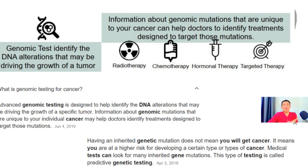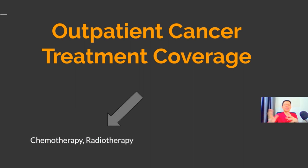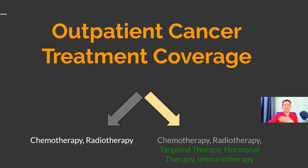Medical cards have evolved to cover genomic testing for cancer, which I think is significant. Moving on to outpatient cancer treatment coverage: conventionally, medical cards cover chemotherapy and radiotherapy within annual or lifetime limits. But due to advances in medical technology, treatment has also evolved. There are now three additional types: targeted therapy, hormonal therapy, and immunotherapy.